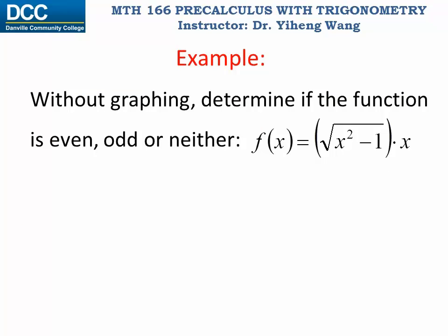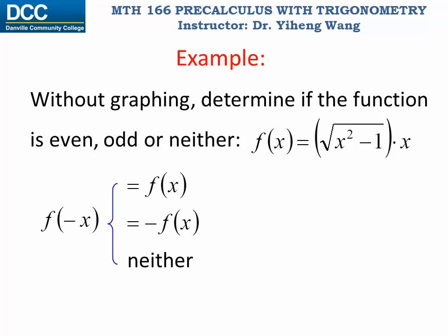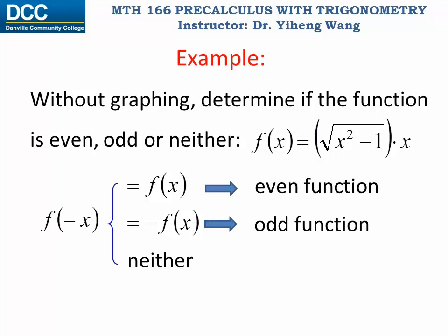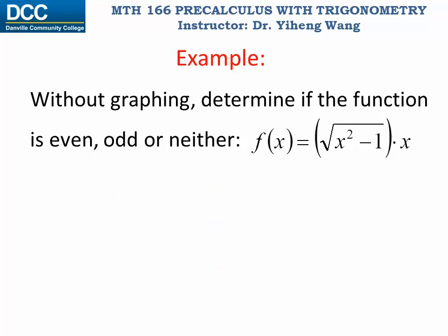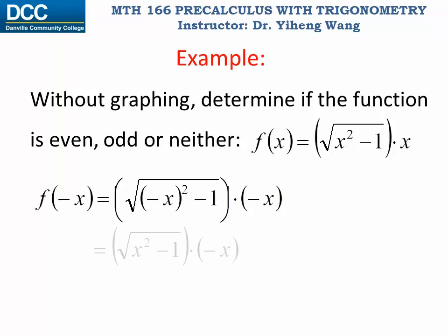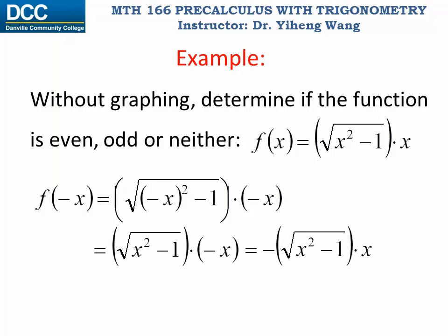So let's look at this example. We need to determine if this given function is even, odd, or neither algebraically without using a graph. For this type of problem, the strategy will be simply to evaluate f(-x) and see if it equals f(x), negative f(x), or neither. In the first case, that would be an even function. In the second case it would be an odd function, and the last case it would be neither. So to evaluate f(-x), we simply substitute all the x with negative x, and then rearrange. And this equals negative square root of x squared minus one times x, and that is negative f(x). And that tells us this function is an odd function.